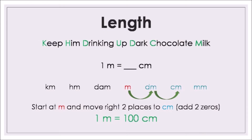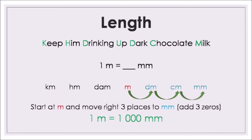Keep him drinking up dark chocolate milk. One metre is how many centimetres? Go to metre and move two places to the right — add two zeros, multiply by 100, move the point two places to the right. One metre is 100 centimetres. One metre is how many millimetres? Move three places to the right, add three zeros, multiply by 1,000. One metre is 1,000 millimetres.